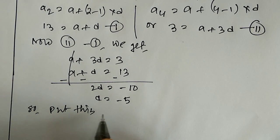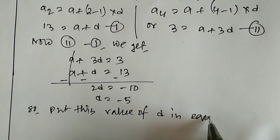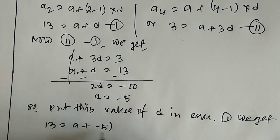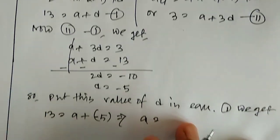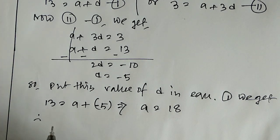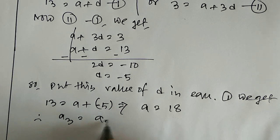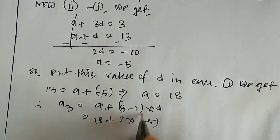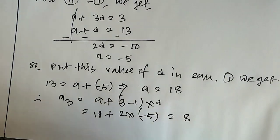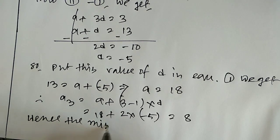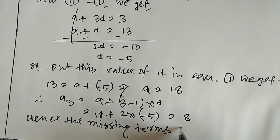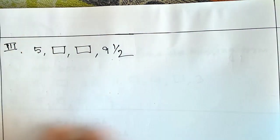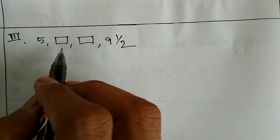Putting the value of d into equation 1: 13 equals a plus (minus 5), so a equals 13 plus 5 equals 18. Now a3 equals a plus (3 minus 1) into d, which is 18 plus 2 into (minus 5), giving 18 minus 10 equals 8. Hence the missing terms are 18 and 8.